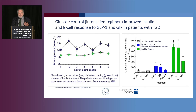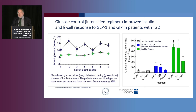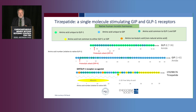In type 2 diabetes, there is a reduced insulinotropic response to GIP. However, colleagues from Copenhagen treated type 2 diabetic patients with intensified insulin regimens for just 4 weeks, then tested their response to GIP and GLP-1. After intensified insulin treatment, they showed improved C-peptide secretion, though it did not come close to healthy subjects. There still is reduced responsiveness to GIP even after short-term exposure.